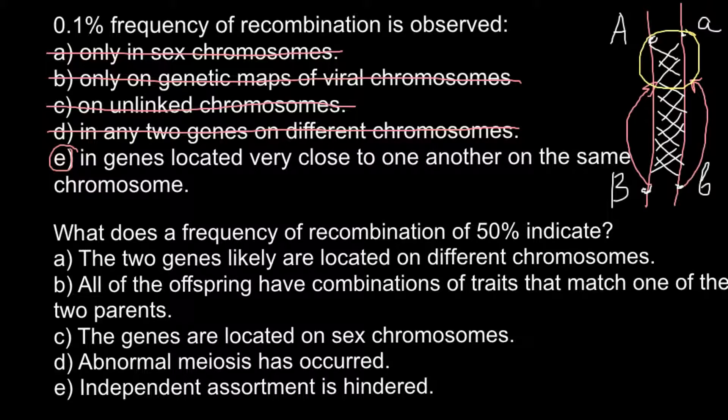Answer B: all of the offspring have recombinations of traits that match one of the parents. This is not true because recombination is a completely random process.